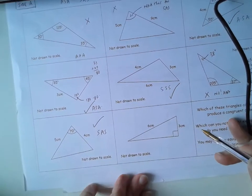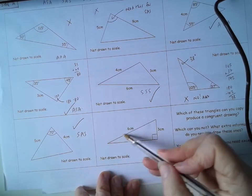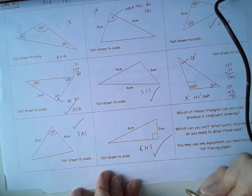Now this one here, well we have a right angle, we have a hypotenuse and we have a side. So yes, right angle, hypotenuse, side. We can get the exact copy of that.